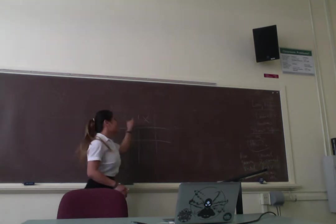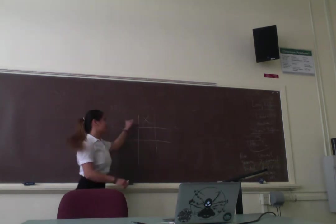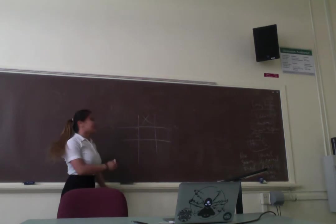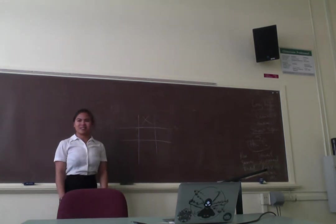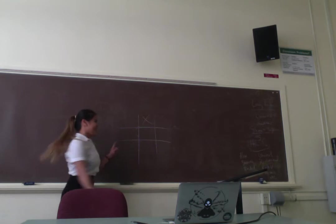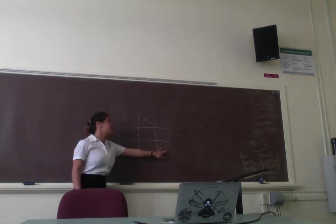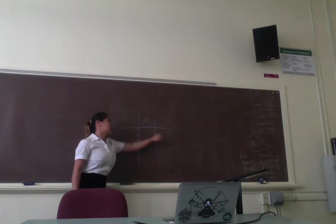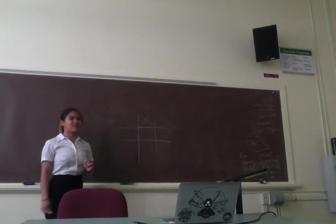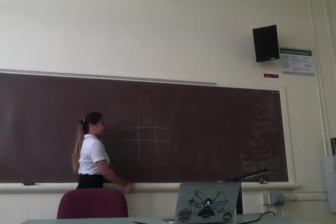Because if your opponent chooses any of those spots that creates a T, the red ones, unfortunately you can't win. But, if they choose any of the other spots, like these two corners, or these middle edges, then you've already won. And I'll show you.